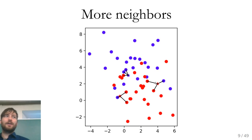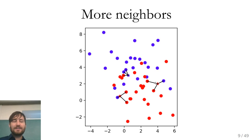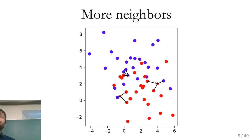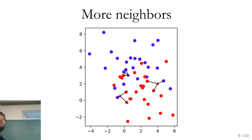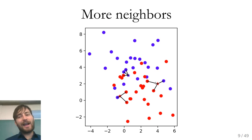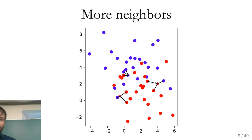The obvious question is: what is the right number of neighbors to use? This is an example of a hyperparameter — something you don't learn from the training data but must set yourself. We'll talk about how to pick hyperparameters today, and for every model over the next couple of weeks.